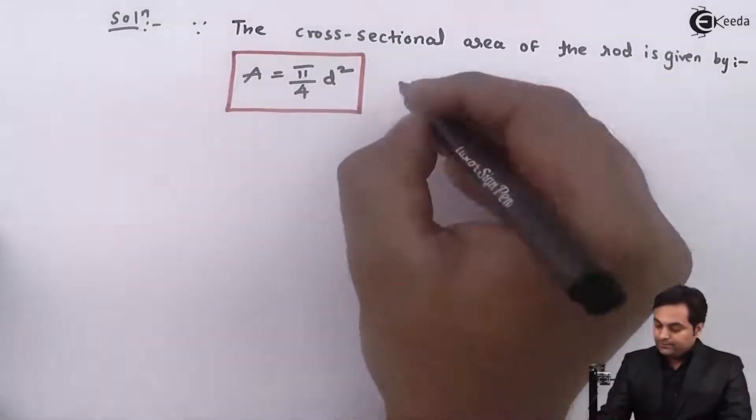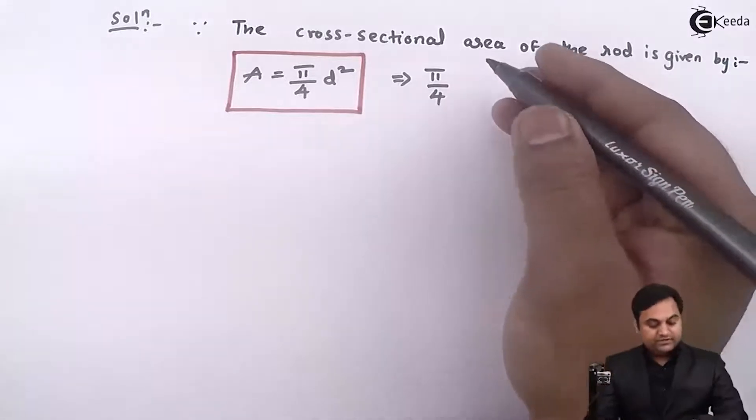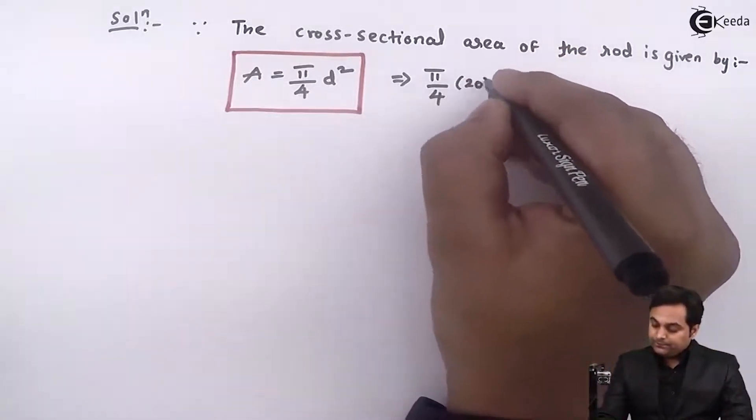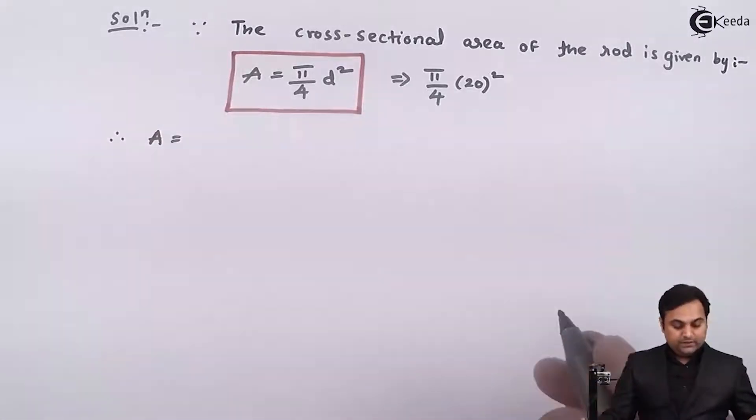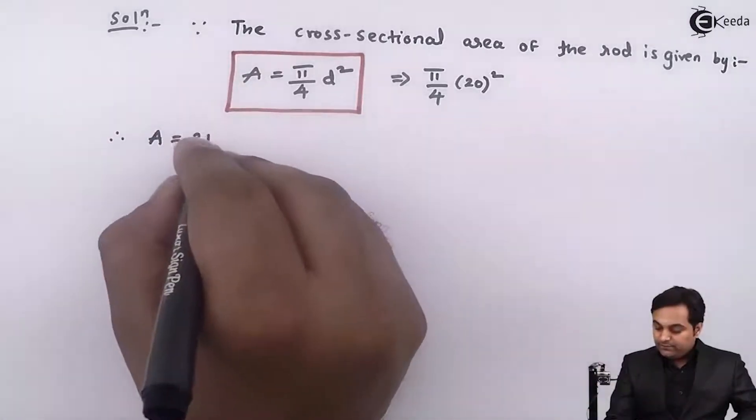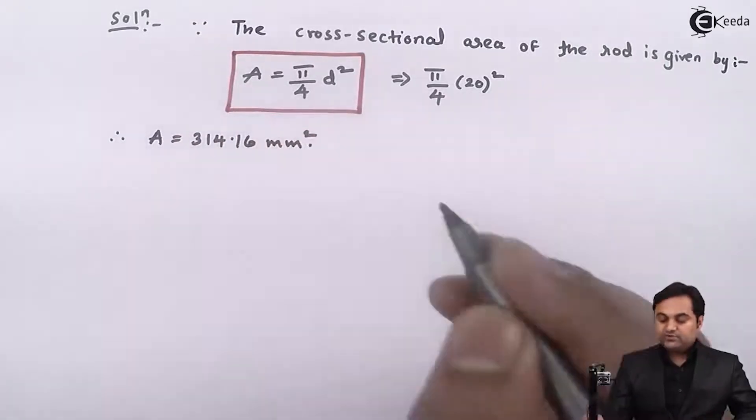So here pi by 4 into diameter is given as 20, so area, this comes out to be 314.16 mm square.